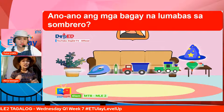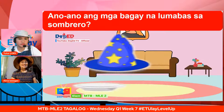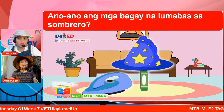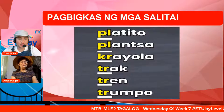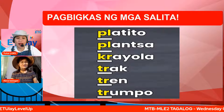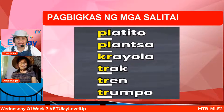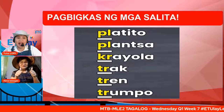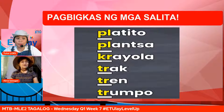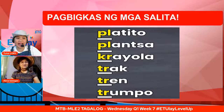Basahin natin: platito, plancha, crayola, track, tren, trumpo. Pansinin natin ang mga nakakulay dilaw — ang mga nakakulay dilaw na ito ay katinig. Napag-aralan natin ang tawag sa dalawang katinig sa isang pantig ay kambal katinig o cluster. Tignan natin: ang una ay platito, pangalawa ay plancha — meron siyang dalawang cluster, para sa una ay PLA at saka CHA. Ang pang-tatlo ay crayola: C-ra-yo-la. Pang-apat ay track. Pang-lima ay tren. At ang panguli ay trumpo.